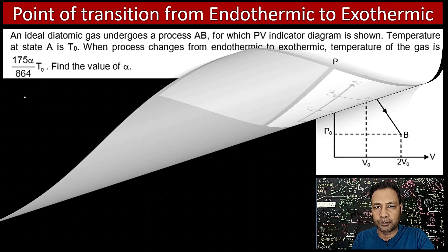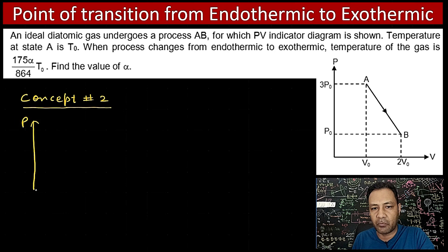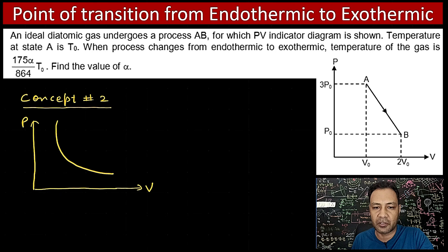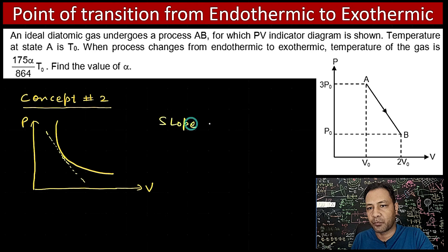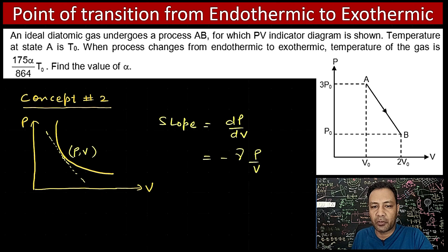Concept number two: in a PV diagram, if we draw an adiabat, the slope at any point on the adiabat is dp/dv. The slope at a point with coordinate (p, v) is given by minus γp/v. That is the most important concept we will use.